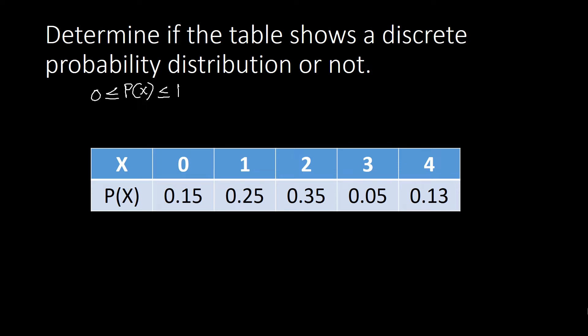For each here, each of your probability. So let's start with this one. This one is within your zero to one value. This one also. And this one. This one and this one also. So that means to say our first property is satisfied. Let's go to the second property or condition.